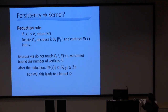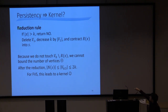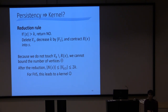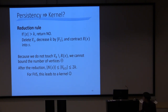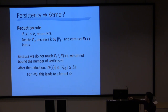Now we show this persistency reduction yields a kernel. After applying the reduction, unlike vertex cover, we cannot bound the total number of vertices because we don't delete value-0 vertices unreachable from s. However, we can bound the degree of s: after the persistency reduction, all neighbors of s have value 1/2 in the optimal LP solution, so the degree of s becomes at most 2k. For feedback vertex set, this leads to a polynomial-size kernel.